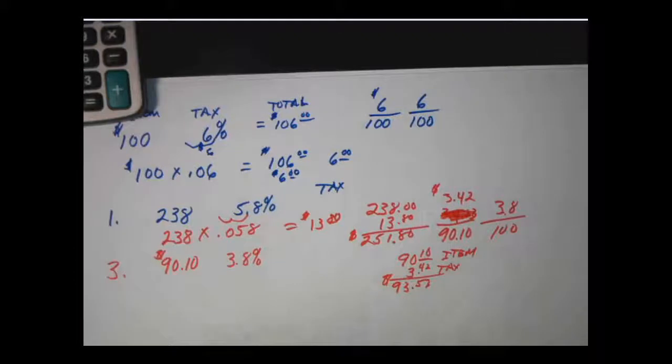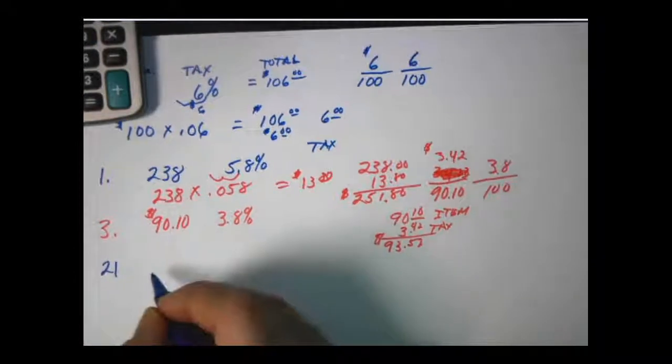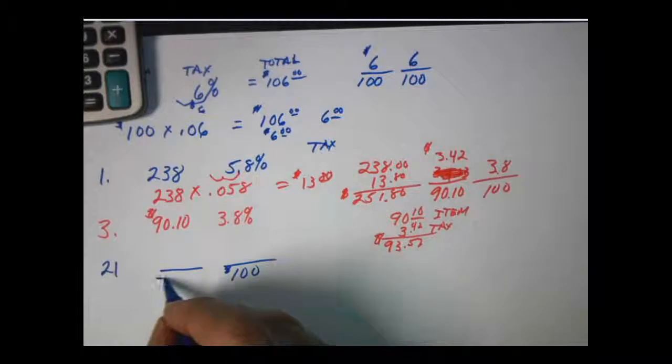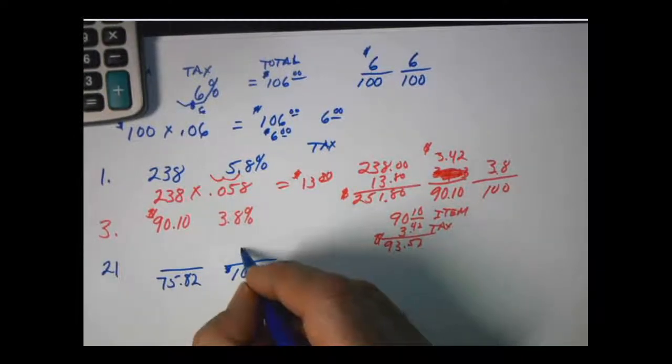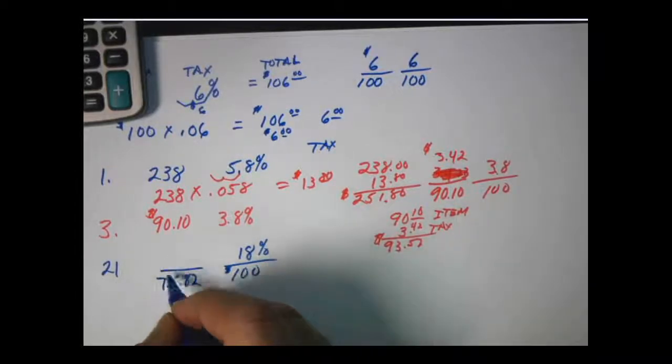Now another type of question starts with number 21 where they're going to have an original price. They're going to give you a discount and then they want to know the sale price. So the original price, as we set up our problem here, says original price was $75.82. The discount rate was 18%. And we want to know the amount of the discount.